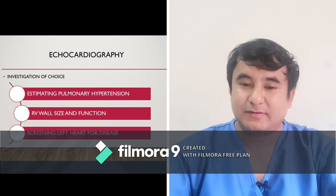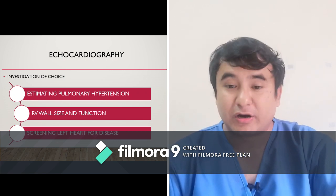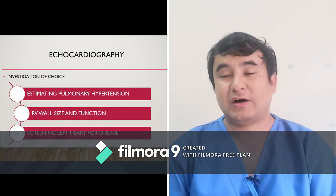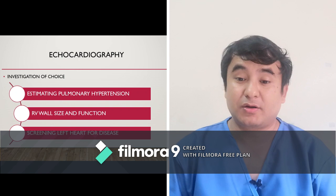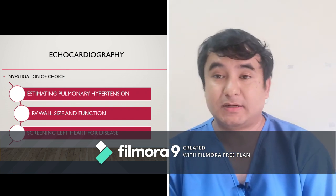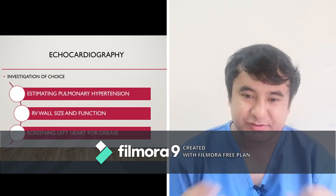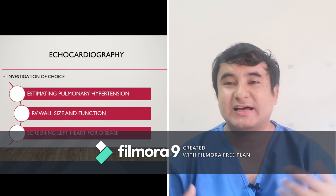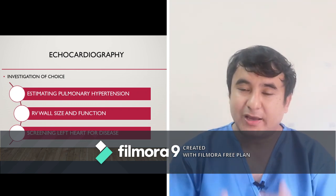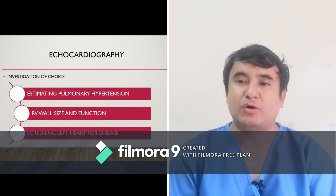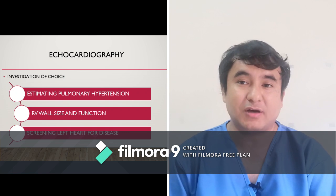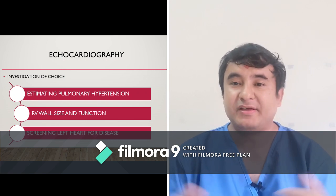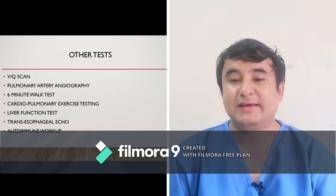Another important test available in most tertiary care centers is echocardiography. On echo, you can see the right ventricular wall size, the presence or absence of tricuspid regurgitation, and you can grossly estimate pulmonary artery pressure by calculating the right ventricular systolic pressure. You can also assess whether there is any problem on the left side of the heart — such as mitral stenosis, MR, AS, AR, or low ejection fraction. To diagnose idiopathic pulmonary artery hypertension, there should be no abnormality on the left side; only right-sided changes like RV hypertrophy, TR, and increased RVSP.